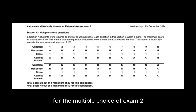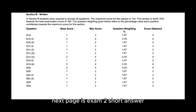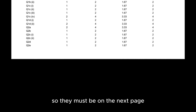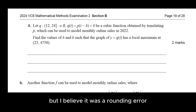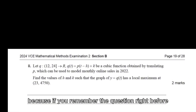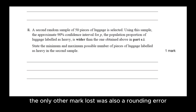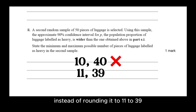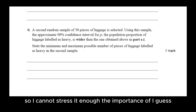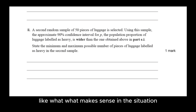Now pulling up the statement of marks for the multiple choice of Exam 2 — it's 20 out of 20, so I don't think I have much to say there, but ask if you have questions about any of those multiple choice questions. Next page is Exam 2 short answer. I can see one mark lost here and here. I believe it was a rounding error because the question right before had some numbers that were not so pretty. The only other mark lost was also a rounding error where I think I just kept it at 10 to 40 instead of rounding it to 11 to 39.